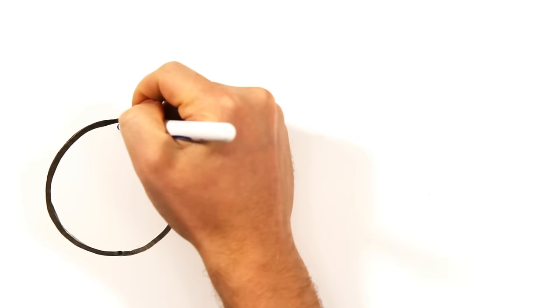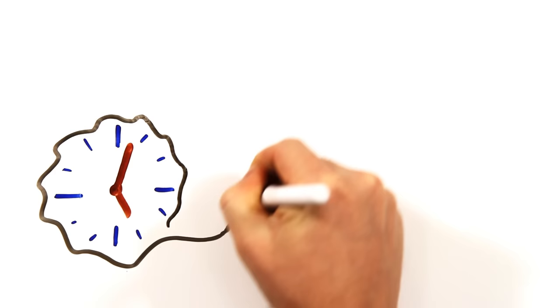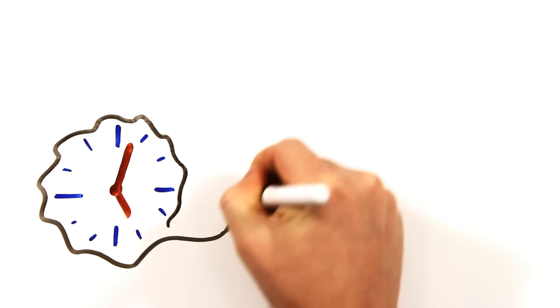Your inner clock is regulated by many proteins which are created from various genes in your DNA. Studies have even shown that a single change of the genetic code near a gene called period 1 can result in an hour difference in your waking time.